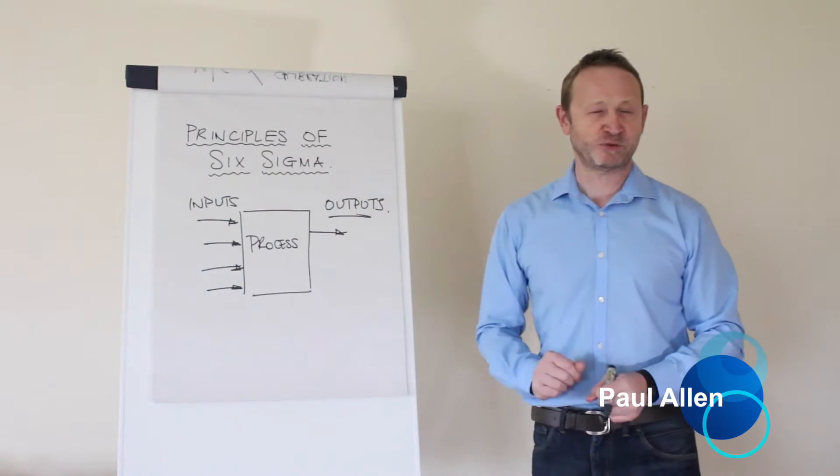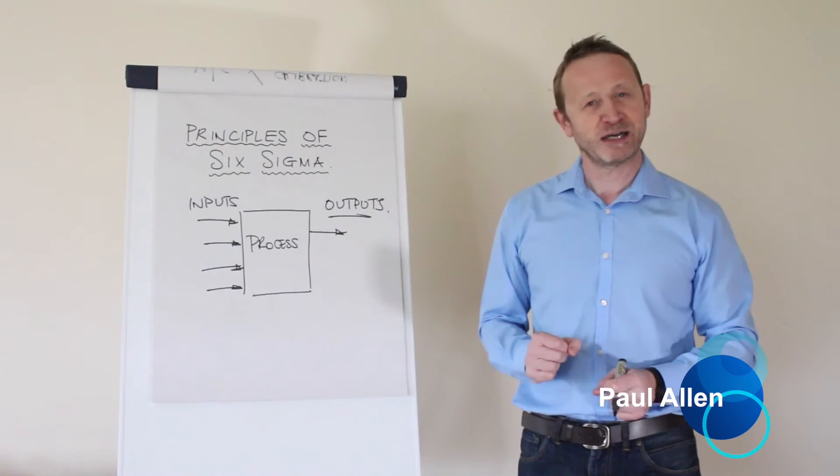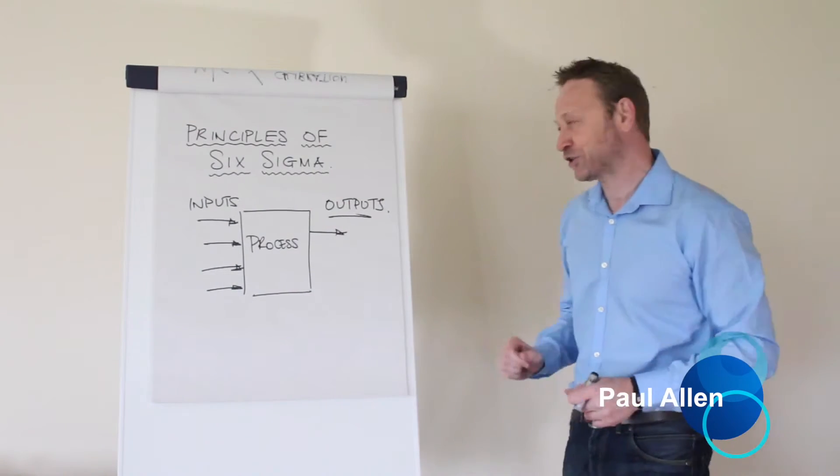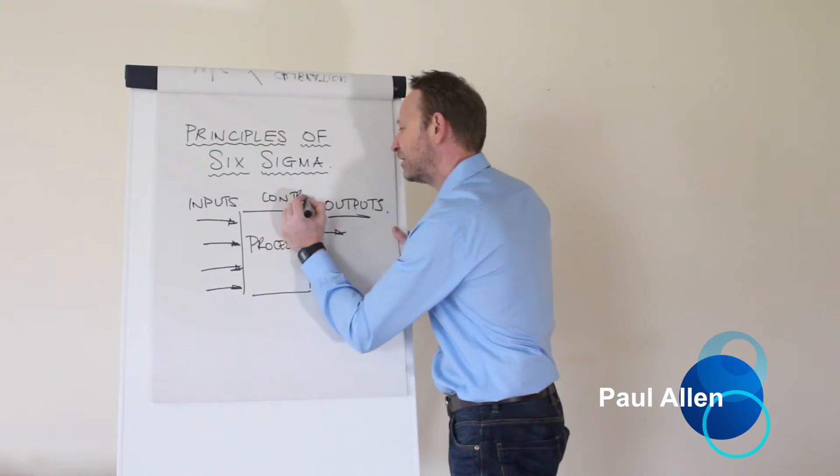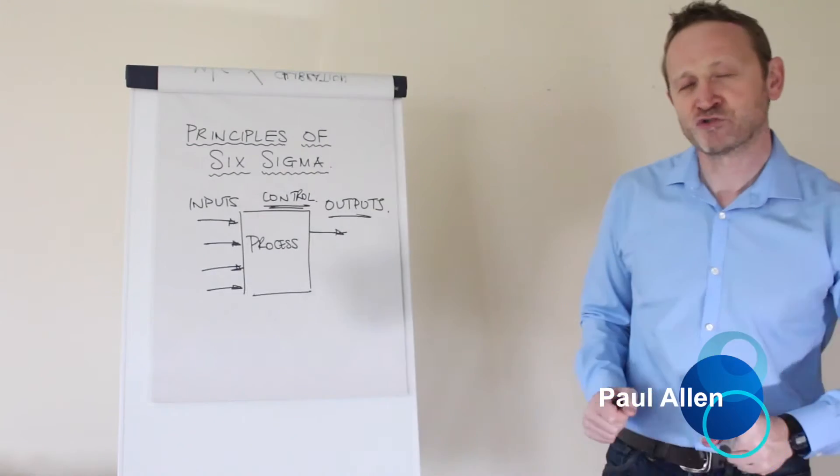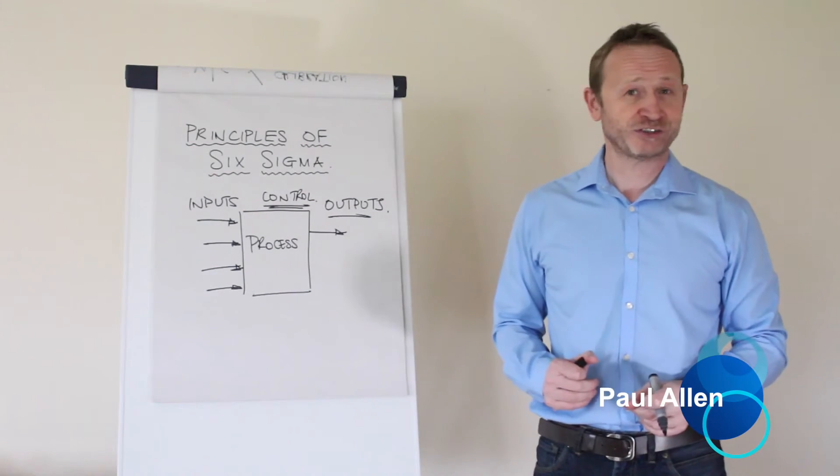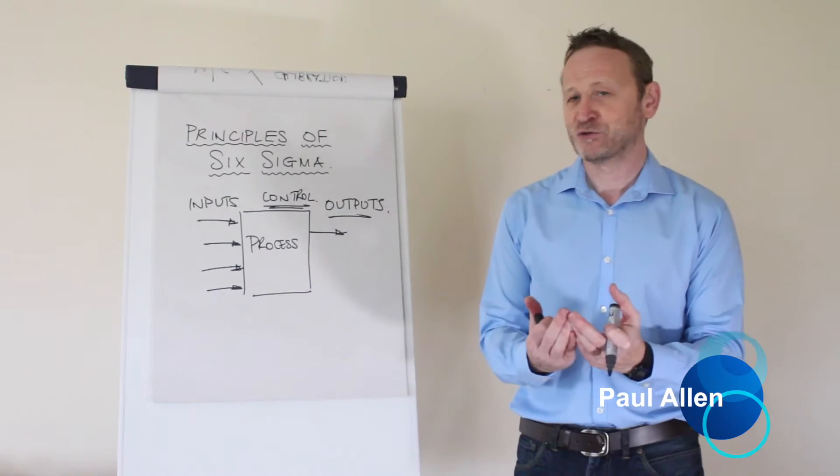So what's the basic principle that a black belt is going to use when thinking about inputs and outputs? Well once you realize that you have inputs and outputs, the word that's missing is control because the inputs control the outputs in a process always. It's the laws of physics essentially and what Six Sigma is based on is the laws of physics.